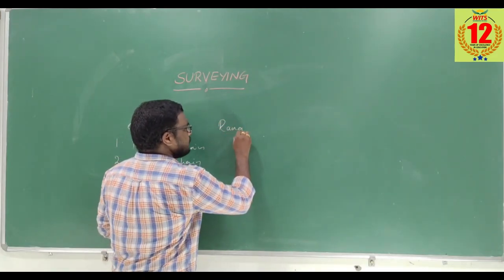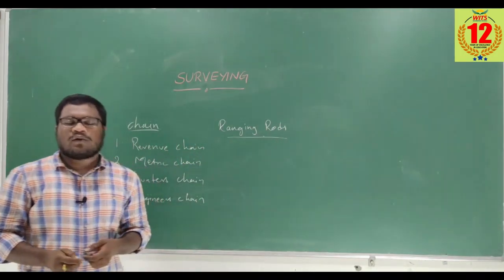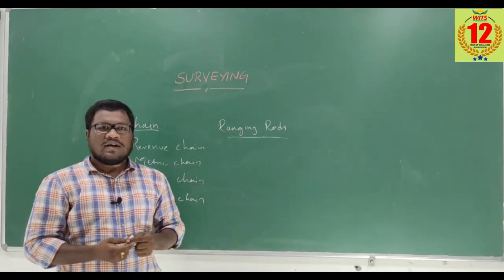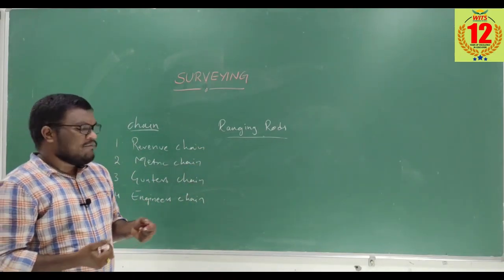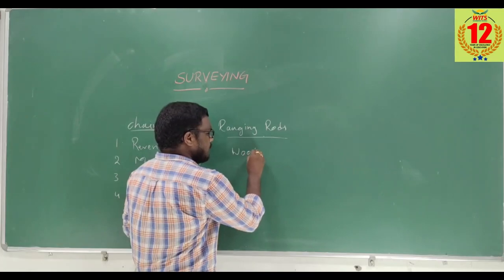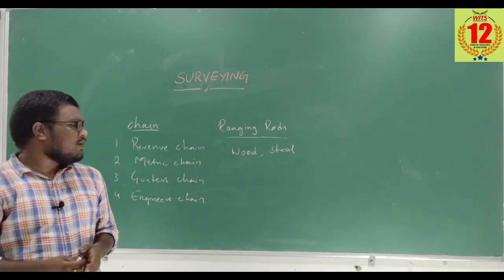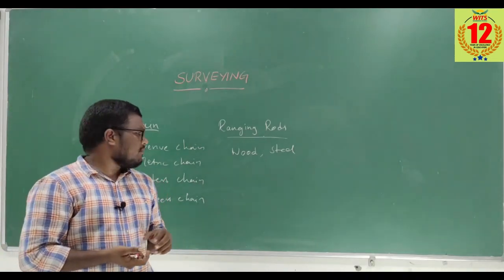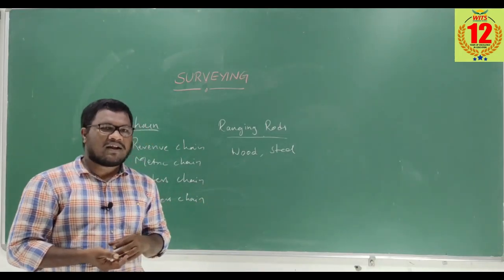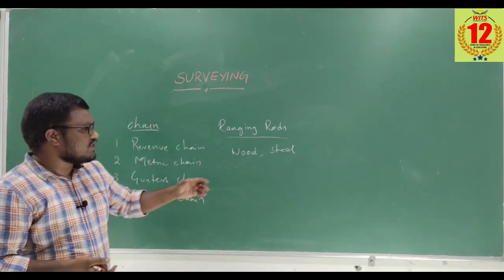Another instrument used is ranging rods. These are fixed at the stations where the survey is to be performed — at the end points — so that we can identify the stations easily. Ranging rods are made up of wood or steel. In the olden days wood was used due to good availability, and well-seasoned timber was used for manufacturing them. Later, wood was replaced by steel.